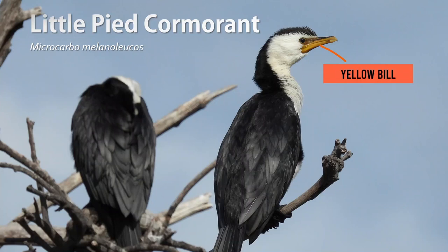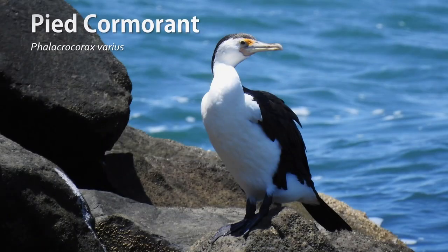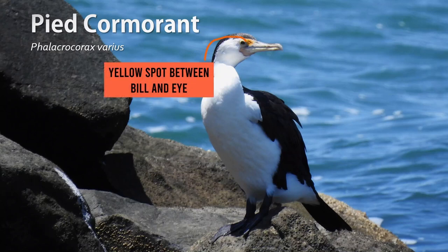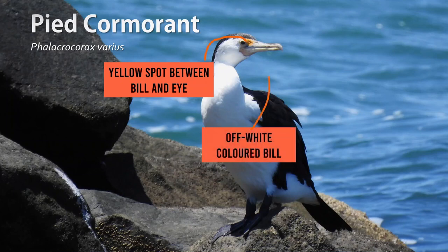The term 'pied' in bird names means black and white, and 'little' in the species name refers to the noticeable size difference between it and our next species: the pied cormorant, which is a much larger species with a similar black and white pattern. Because the pied and the little pied share almost the same name, I'll be referring to this species as the Australian pied cormorant throughout this video. The primary identifier for this species is the yellow patch between the eyes, and a secondary identifier is the large off-white hooked bill.